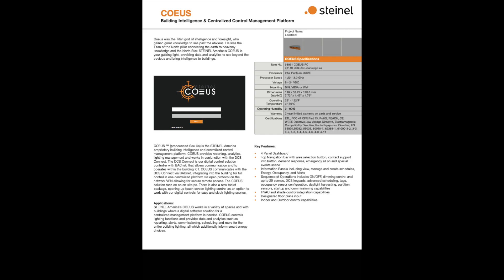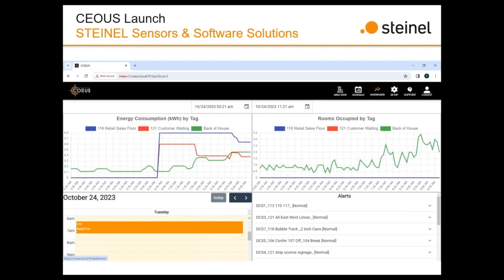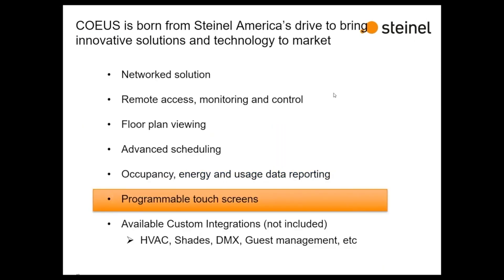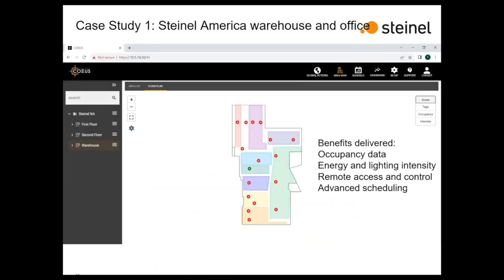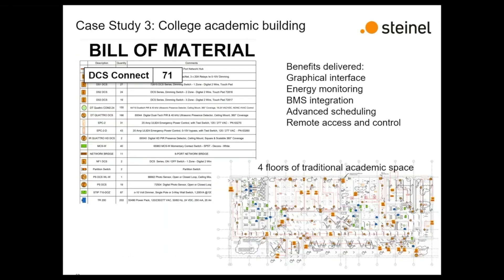Now, as more and more building systems have a graphical user interface, Steinel can offer you that. From their floor plan that allows you to turn the lights on and off, or see what areas may be occupied, to the energy and data management and the dashboards that all come along with the CS platform — you have a lot of capability at your fingertips. A major software feature is the graphical floor plan that lets you actually see what's happening in your facility.